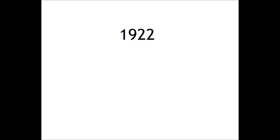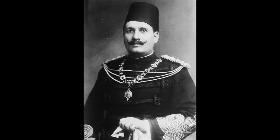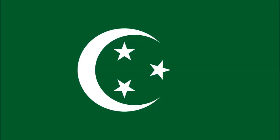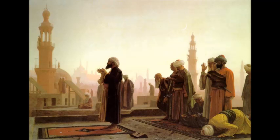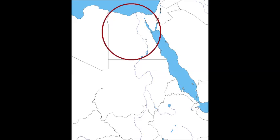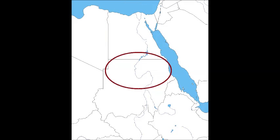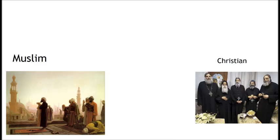The year is 1922 and the United Kingdom just recognized Egypt as a new nation. Egypt was then placed as a monarchy led by Fuad I. He then made the flag with a green background representing agriculture, while others say it represents Islam. On top of the green was a crescent with three stars. The three stars have two meanings: the first says it represents Egypt, Nubia, and Sudan, while others say it represents the religions in Egypt — the Muslims, Christians, and Jews.